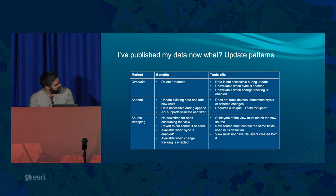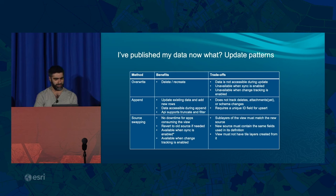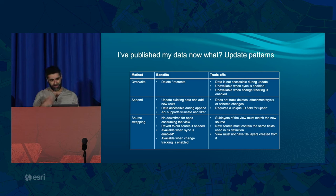There are three main update patterns for ArcGIS Online feature layers: overwrite, append, and source swapping. Source swapping is where views come into play. They all have pros and cons. Overwrite is logistically straightforward — you delete and replace everything. One downside is that while updating, your data may not be accessible.